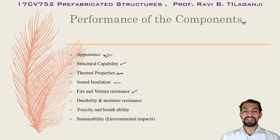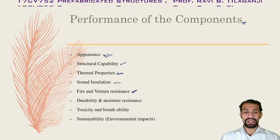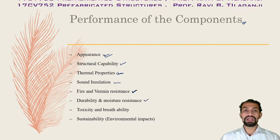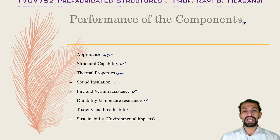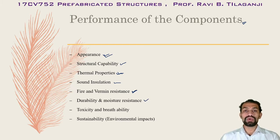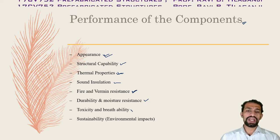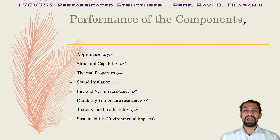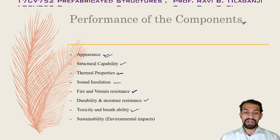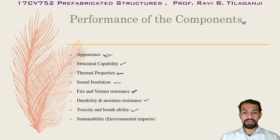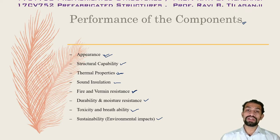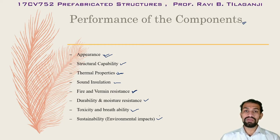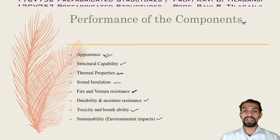Fire and vermin resistance - whether fire can catch or insects can get in. Durability and moisture resistance - how many days it can last and how much we can utilize it. Toxic and breathability - whether harmful smells are going to come and what remedies are needed. Sustainability is most important - related to environmental impact, whether we are working against or with the environment.